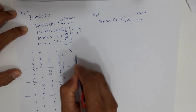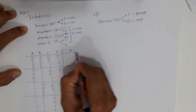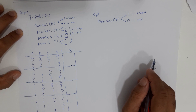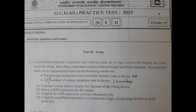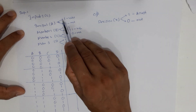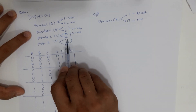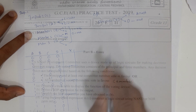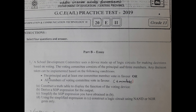Now to fill the output side — the decision — we need to understand the conditions given. There are two bullet points. The first bullet says the principal and at least one committee member vote in favor. The second bullet says all four members of the voting committee vote in favor, meaning all four inputs are 1, so the decision should be 1. The principal is represented by letter A.